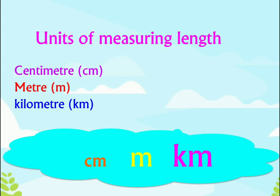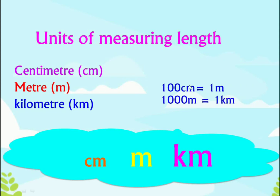Let's look at the relationship. 100 centimeters equals just one meter, so if you have 100 centimeters you have one meter. Then if you have 1,000 meters, you have just one kilometer. So that tells us that kilometer is larger than meter.